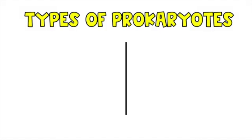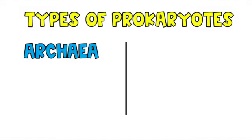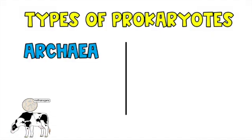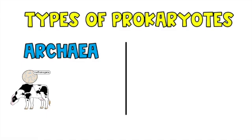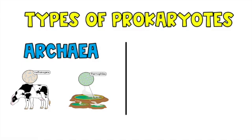The two types of prokaryotes are archaea and bacteria. Archaea are extremophiles, which means that they live in very extreme locations. We have methanogens and thermophiles — these two types of archaea live in places that have lots of methane gas, which most animals cannot survive in.